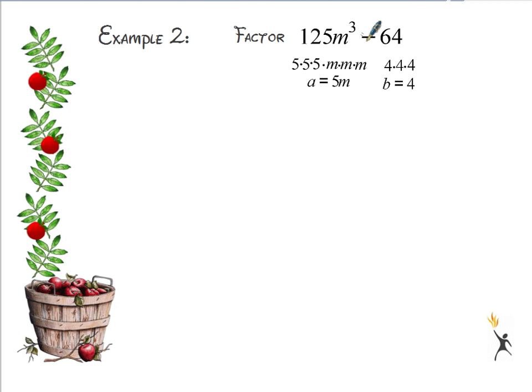Now since this is a difference of cubes, I need to pay attention to the fact that this is subtraction. Here's my pattern. So to factor my difference of cubes, first of all, I'm going to take the first term, the first cube root. And that's just 5m.